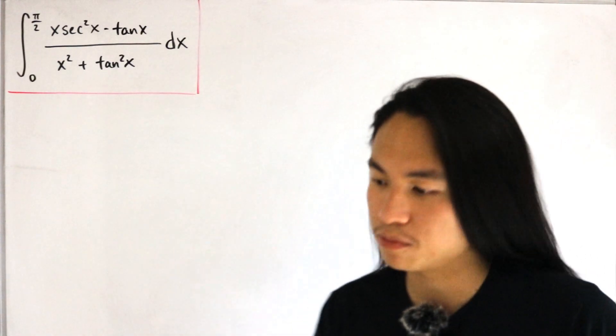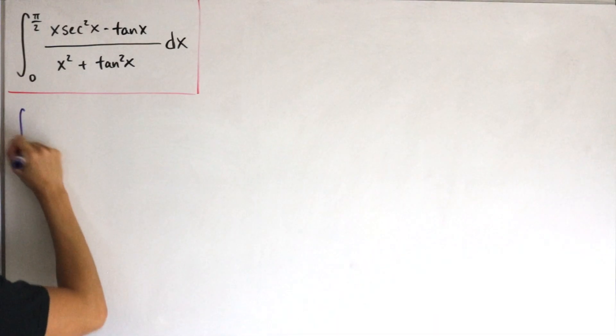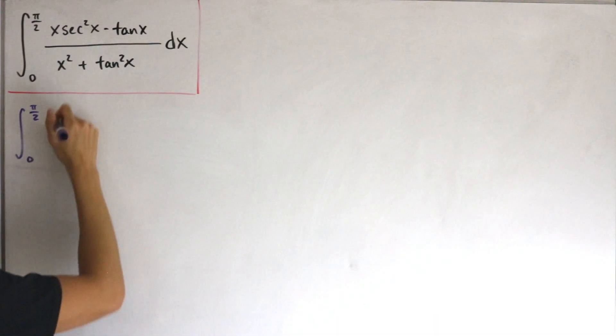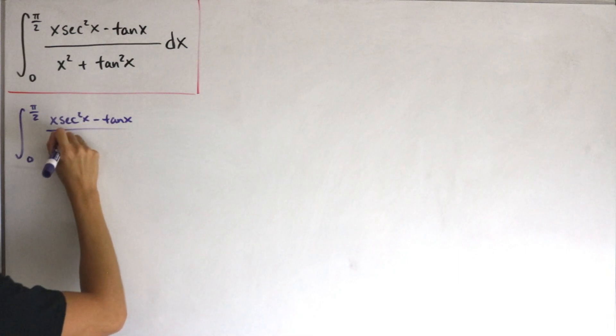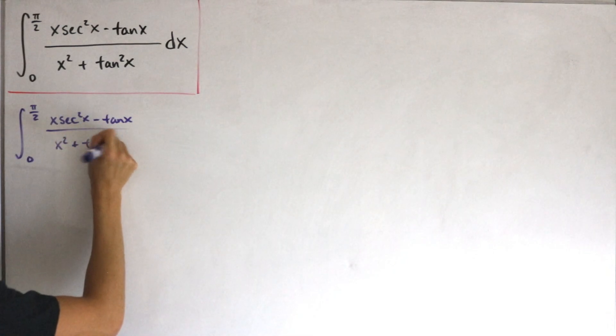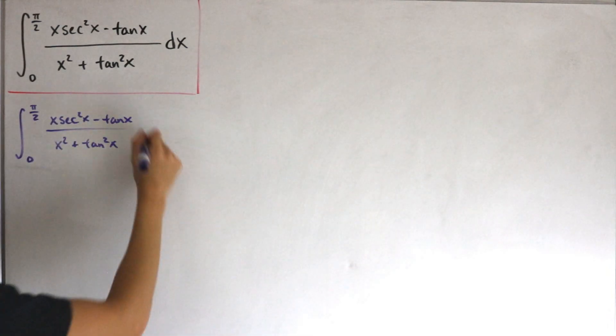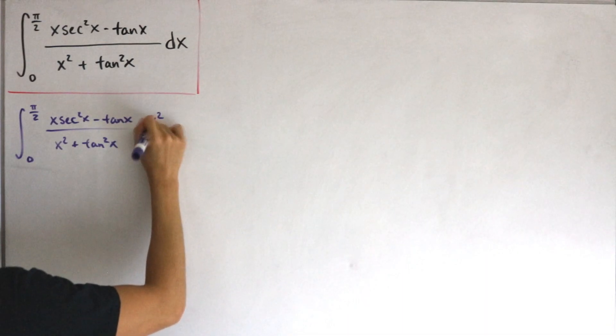We have the integral from zero to π/2, and I'm just going to write the same integrand that we're given: x·sec²x - tan x divided by x² + tan²x. What we'll do is multiply and divide by x².